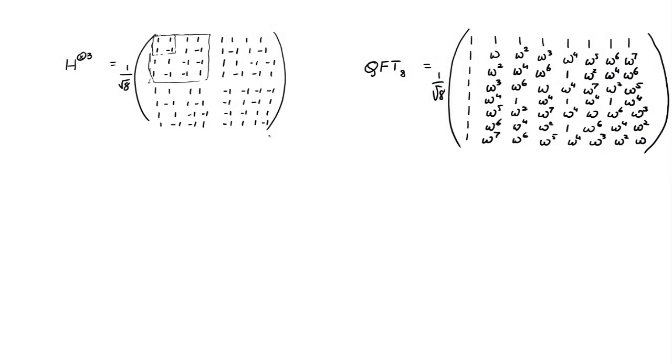Okay. Now, one thing you should notice is that the columns are all plus and minus 1s. They're orthogonal to each other, which means, in fact, that exactly half the entries are the same, and exactly half the entries are opposite.